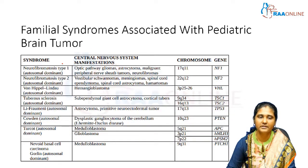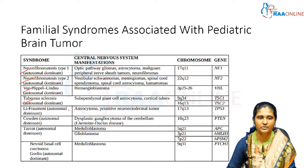Coming to familial syndromes, some syndromes are associated with pediatric brain tumours. In neurocutaneous syndromes — neurofibromatosis type 1 and type 2, von Hippel-Lindau, and tuberous sclerosis — CNS manifestations include optic gliomas, astrocytomas, malignant nerve sheath tumours, and neurofibromas. Specifically, astrocytomas are associated with neurofibromatosis type 1.